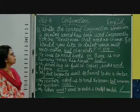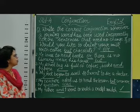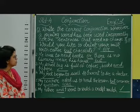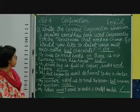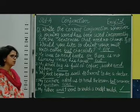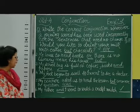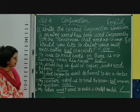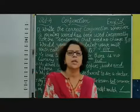To summarize: 'Would you like to drink your milk with coffee or chocolate?' — 'but' is wrong, use 'or'. 'He loves to read books, but there is no library near his house' — 'or' was wrong, use 'but'. 'My school bag is full of copies, books and papers' — correct. 'My foot began to swell, so I went to see a doctor' — correct. 'My teacher asked us to read the lesson and answer the question' — 'but' was wrong. 'My father and I went to watch a cricket match' — correct. In this way, we do this exercise.